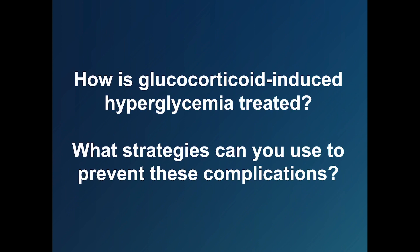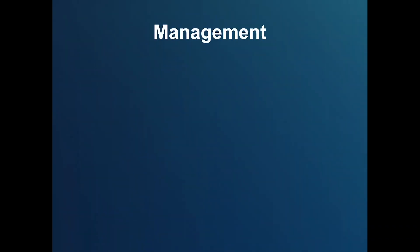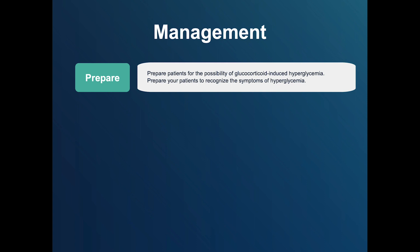There are four important steps to managing glucocorticoid-induced hyperglycemia. The first step is to Prepare. It is important to prepare patients for the possibility of glucocorticoid-induced hyperglycemia — prepare them to recognize the symptoms, and for those who already have diabetes, for the possibility that their blood sugars may become much more difficult to manage.